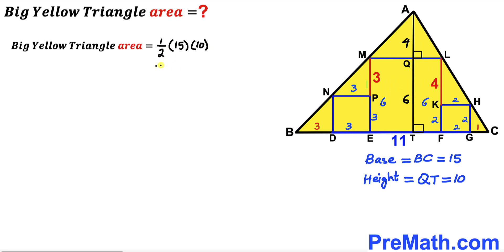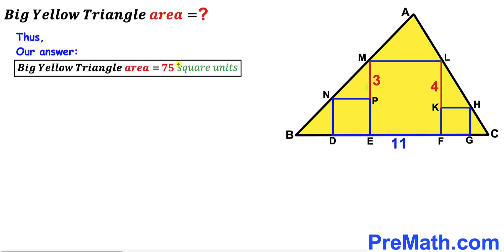Area = ½ × 15 × 10 = 75 square units. Thus the area of this big yellow triangle turns out to be 75 square units. Thanks for watching and please don't forget to subscribe to my channel for more exciting videos.